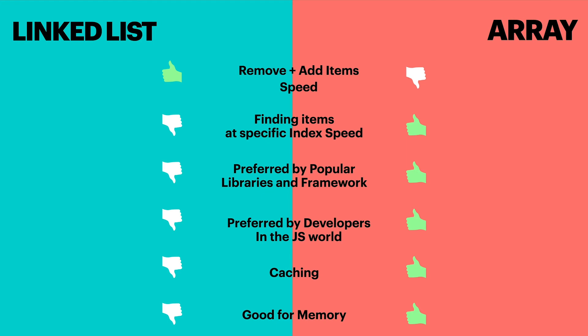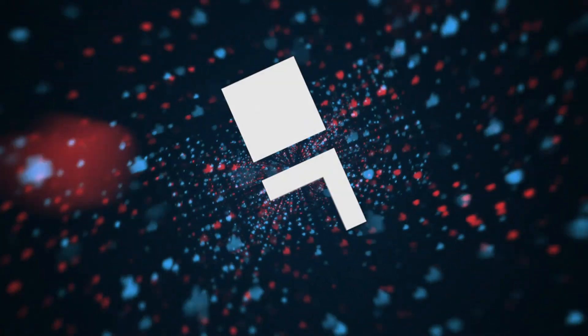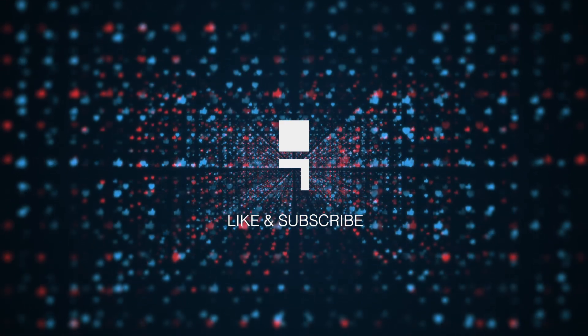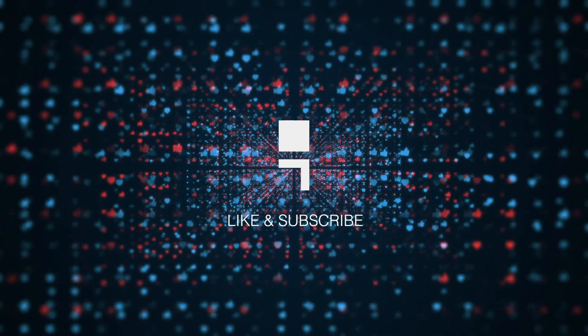Prefer arrays for their random read and write capability, when memory is a concern, or when you know how big your list can get. Choose arrays if you are implementing a cache system, need quick iteration through your list, or if the library or framework you are working with has no support for linked lists.